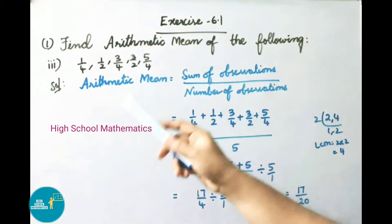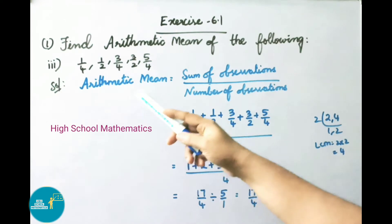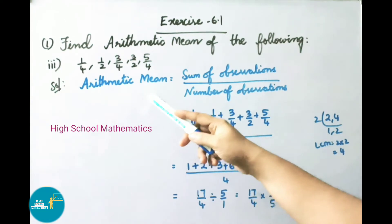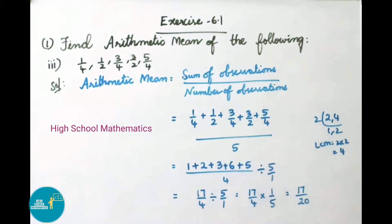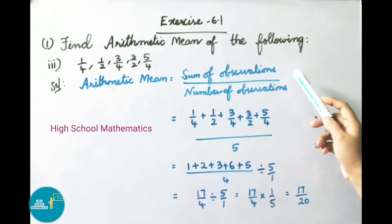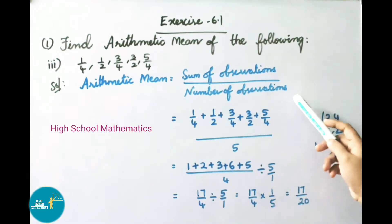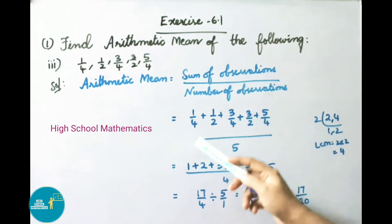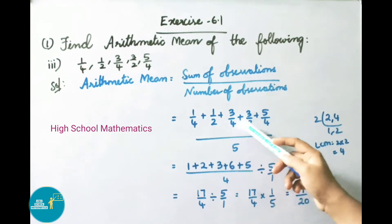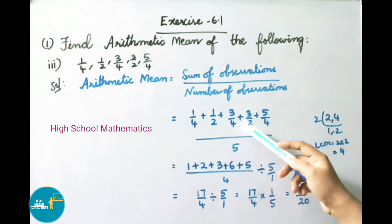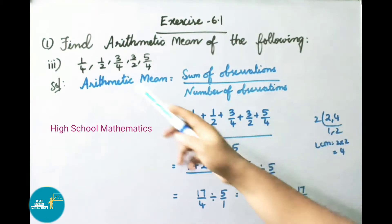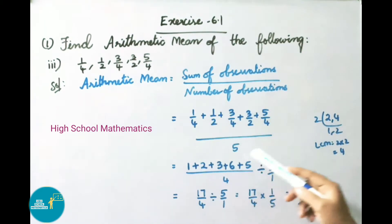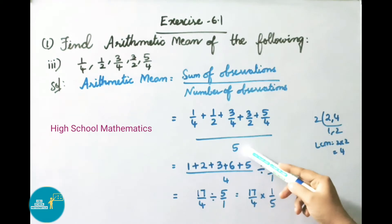Question 1(iii): Find the arithmetic mean of 1/4, 1/2, 3/4, 3/2, and 5/4. Arithmetic mean = sum of observations / number of observations = (1/4 + 1/2 + 3/4 + 3/2 + 5/4) / 5.